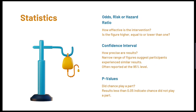A confidence interval highlights the quality and precision of the study. Typically you will see a 95% confidence interval with two numbers demonstrating a range of figures. The 95% means that if the study were to be repeated, 95% of the time the results would fall within the stated range. You want to see a range which is short and narrow, as this would indicate participants experienced broadly similar results.